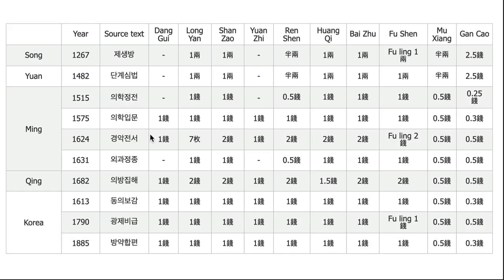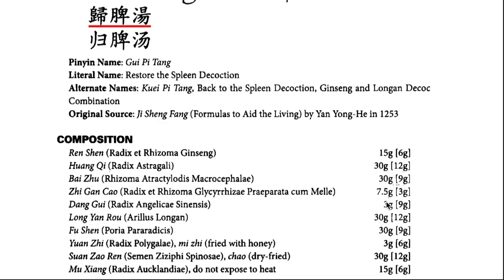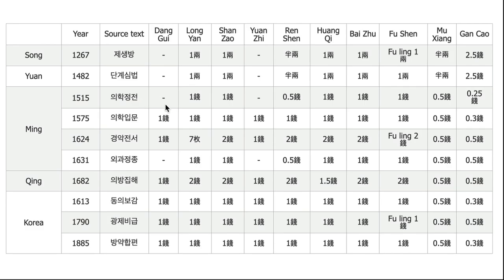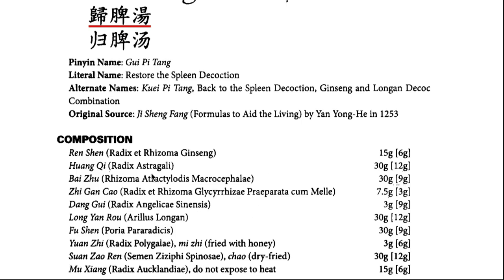Here is the secret. The Song dynasty original formula did not have danggui or Yuanchi. Later in the Ming dynasty they added them, but they had a different scale — 30 grams versus 1 gram. In that Ming dynasty book, everything is evenly 1 gram or 3 grams. But Dr. Chen made a very ridiculous mistake: he put all 30-gram amounts from one of the older texts and then put 3 grams for the newly added herbs. That makes no sense.